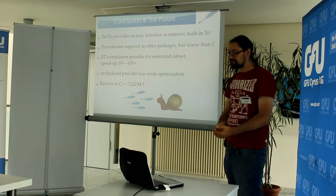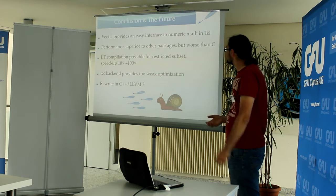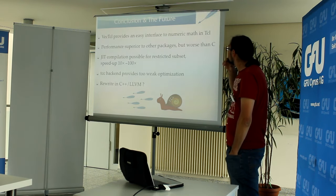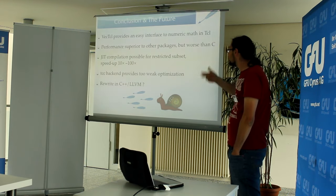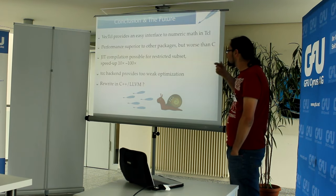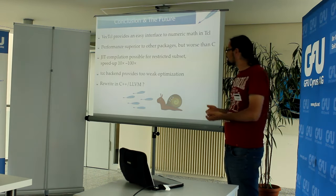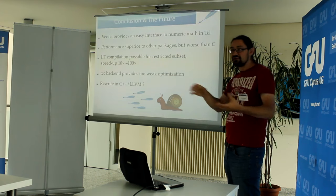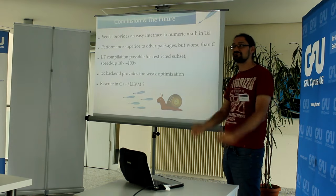So here is my conclusion. Vecticl provides an easy interface to numeric math in Tcl — I think I could convince you that it's relatively easy to write complex calculations. The performance is superior compared to other packages, but it's still worse than C. With JIT compilation we could speed up by a factor of 10 or even 100, but TCC is simply too weak. The question is: do we want to rewrite in C++ and then use LLVM? We could also use C++ within Vecticl itself, which would ease many functions and could cut down the code size by a factor of three.